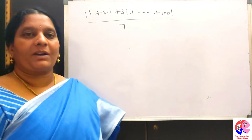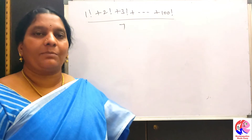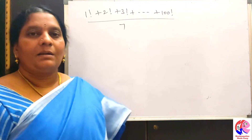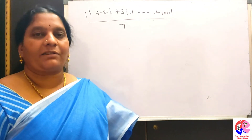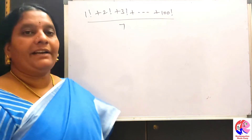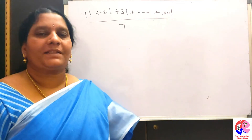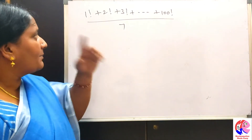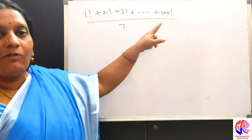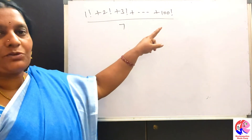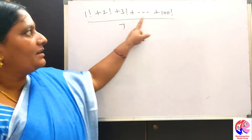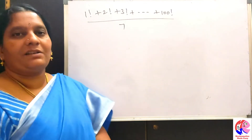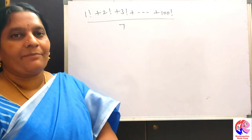We are going to find the remainder when 1 factorial plus 2 factorial plus 3 factorial plus so on plus 100 factorial is divided by 7. What is the remainder?